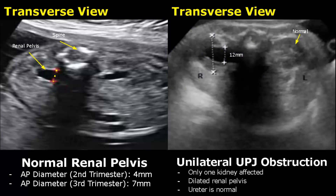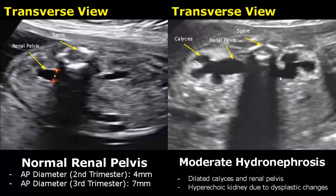In unilateral UPJ obstruction, only one kidney is affected — this kidney is normal. We can also use the term hydronephrosis for a dilated pelvis and dilated calyces. Here we have moderate hydronephrosis — we can see dilated calyces as well as a dilated renal pelvis on both sides, and the kidneys are hyperechoic due to dysplastic changes and damage.